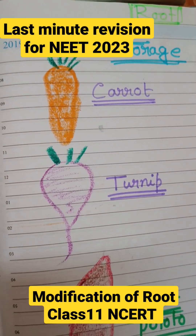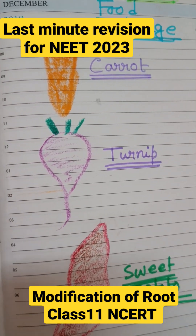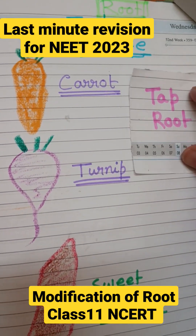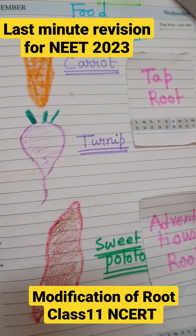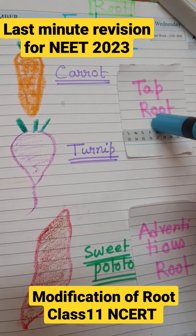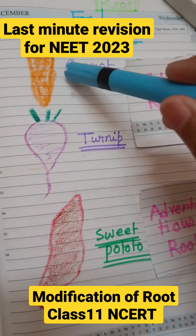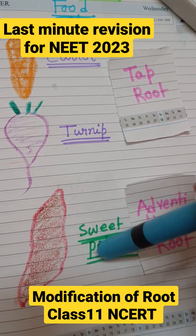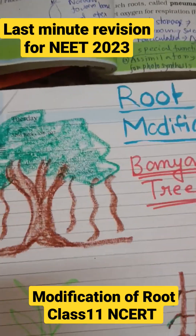The first type: some roots are modified for storing food. Examples are carrot, turnip, and sweet potato. Carrot and turnip are modified tap roots, while sweet potato is a modification of the adventitious root. Don't get confused between potato and sweet potato — sweet potato is the modification of the adventitious root.